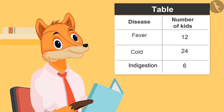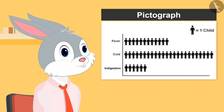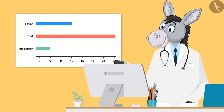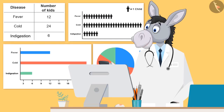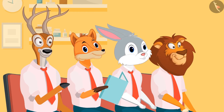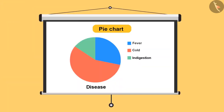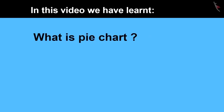This is called a table. Absolutely right. Now look at this data in another form. This is a pictograph. Very good. Can you tell me which chart is this? Yes, this is a strip chart. Very good. Kids, you all know about various types of charts. Do you know about pie chart? No, Dr. Uncle. So, the chart you are seeing on this wall is known as a pie chart. Come, let's learn about it. Today we have learnt what a pie chart is.